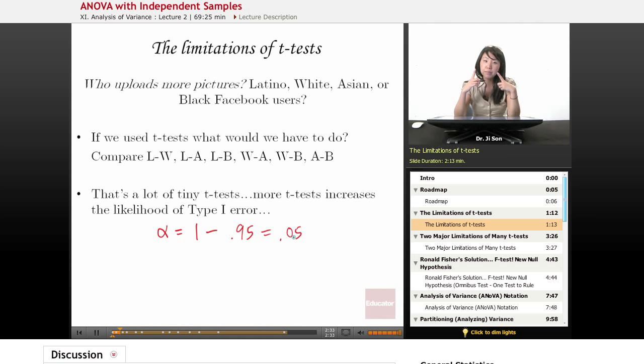But now that we want to calculate the probability of type 1 errors for six t-tests, we have to think back to our probability principles. But really, alpha is going to look something like this: 1 minus whatever your correct rate is, to the sixth power. And that's going to be a much higher type 1 error rate than you really want.